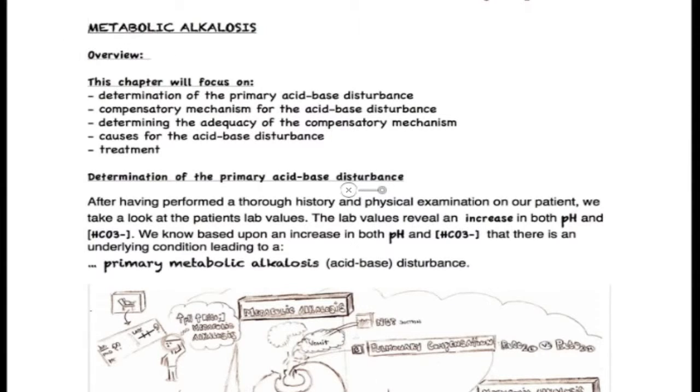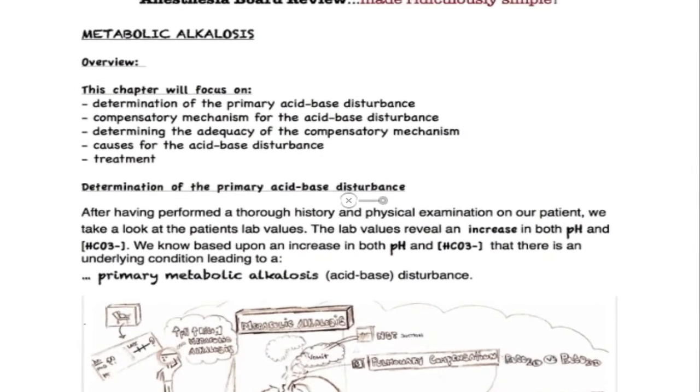As a quick overview, this chapter will focus on determination of the primary acid-base disturbance, the compensatory mechanism for the acid-base disturbance, determining the adequacy of the compensatory mechanism, causes, and treatment for the acid-base disturbance.